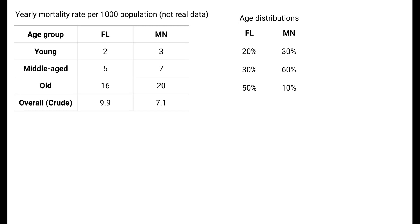However, looking at the mortality rates specific to the three age groups, we actually see a different story. For all age groups, Minnesota actually has higher mortality rates. The higher crude mortality rate for Florida is due to it having an older population than Minnesota. The underlying age distributions in this example are shown on the right.